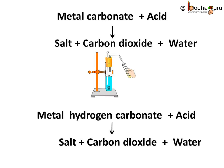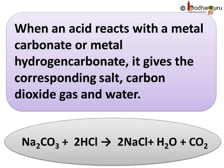So what can we conclude? We can say acids produce carbon dioxide along with salt and water when they react with metal carbonates or hydrogen carbonates. To sum up: when an acid reacts with a metal carbonate or metal hydrogen carbonate, it gives the corresponding salt, carbon dioxide gas, and water. For example, Na₂CO₃ plus 2HCl gives 2NaCl plus H₂O plus CO₂ — sodium carbonate reacted with hydrochloric acid to give sodium chloride along with carbon dioxide and water. That's all for now.